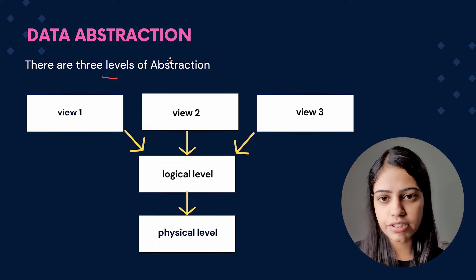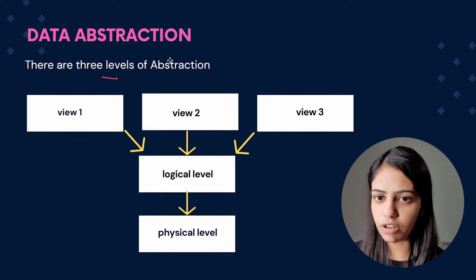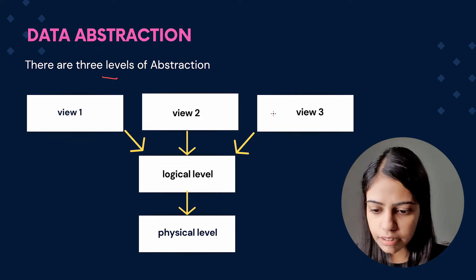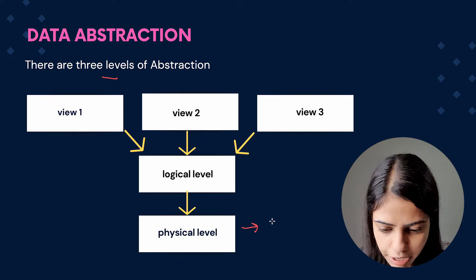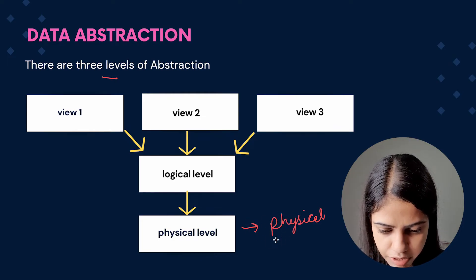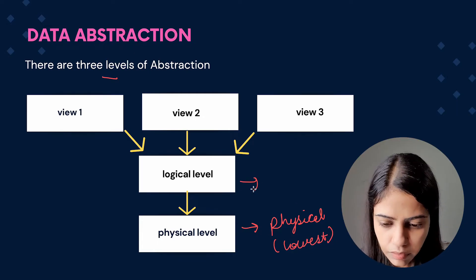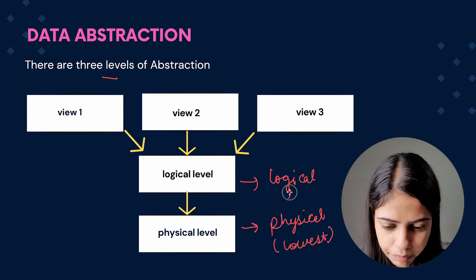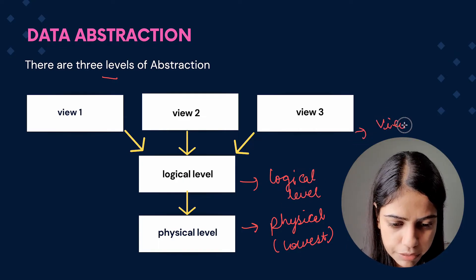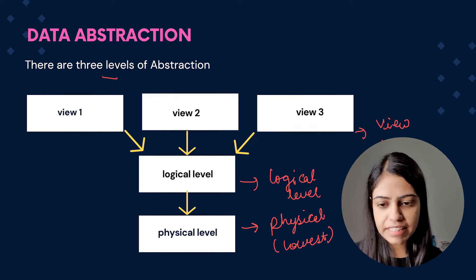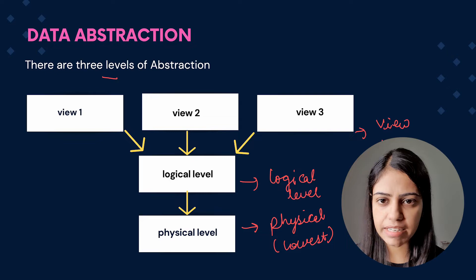So there are three levels of abstraction. The first level is called the physical level, which is the lowest level. The second is the logical level. And the third is called the view level. Let's understand all three levels using an example.